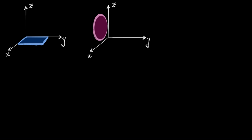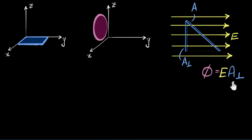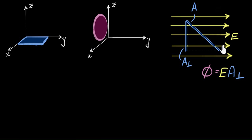Let me give you an example. We've already seen in a previous video how to calculate flux. If you have an electric field E going through some area A, then the flux is just the product of the electric field multiplied by the perpendicular component of that area. Now when you want to communicate this with someone, you have to say so many words — the perpendicular component of the area, perpendicular to the electric field. So many words.